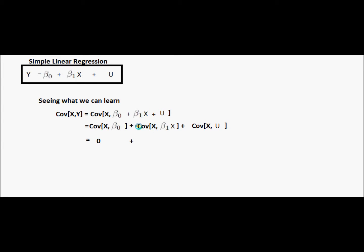The second term is the covariance of x with beta one times x. Now beta one is a constant, which means that we can bring it out of that expression. And what we're left with is we get beta one times the covariance of x with itself. Now the covariance of x with itself is equal to the variance of that random variable.